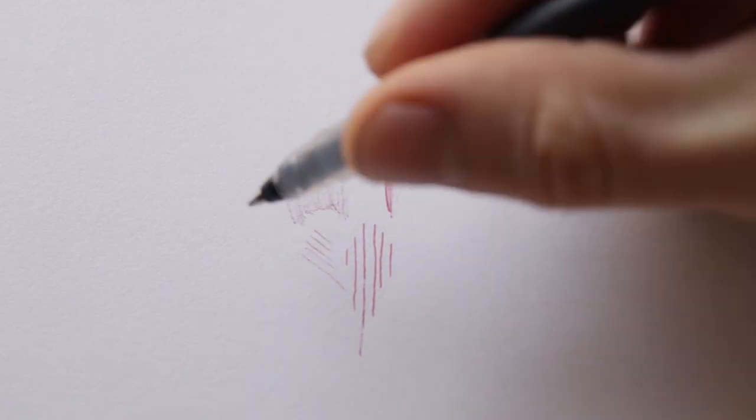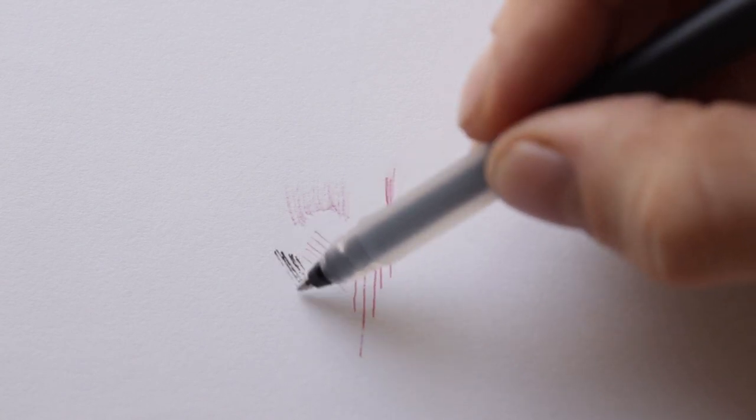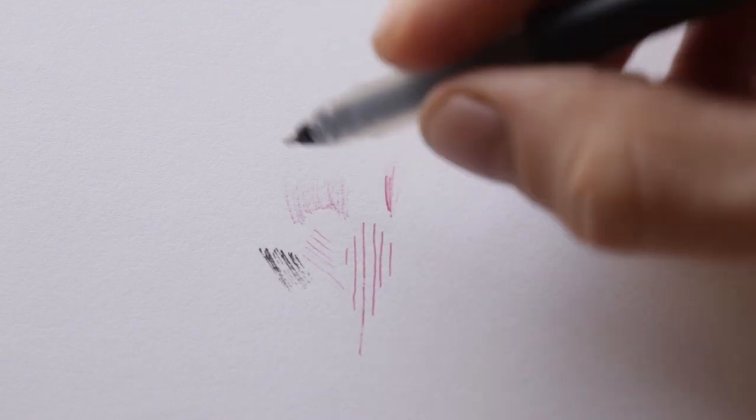The gel pen you can't really shade with it. It just doesn't really work because the ink just goes straight to the paper. Now let's test the smudging of it.